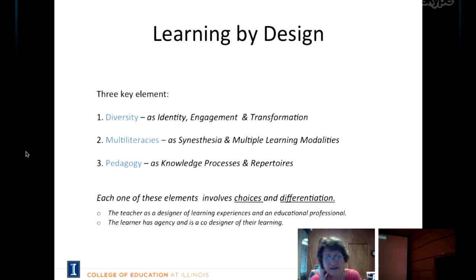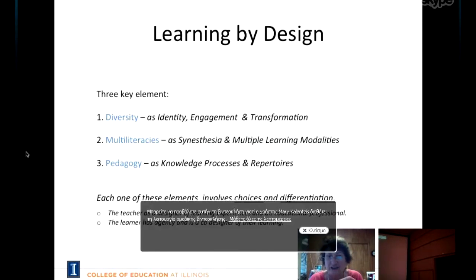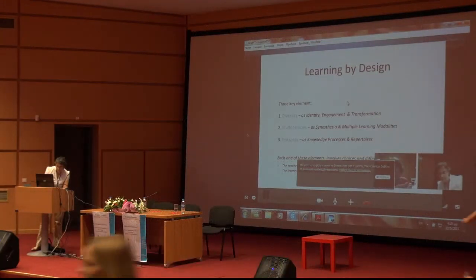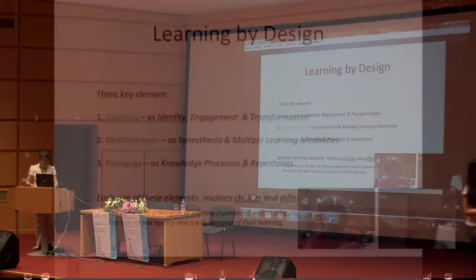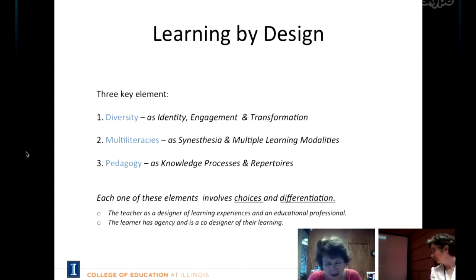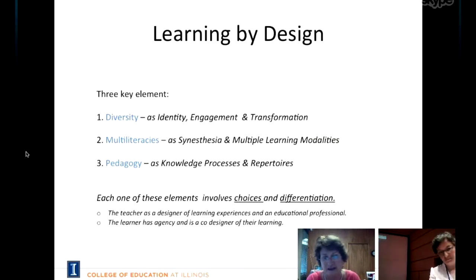In learning by design, there are three key elements that define the tools we use in the preparation of teachers. The first is an orientation — a set of tools for thinking about the diversity of your learners and how you harness their identity so they're engaged for the purpose of transformation. When you choose to be a teacher, the job is not to get through the curriculum or understand only content area. What you're doing all the time is tracking the transformation of your learners — how are they changing as a consequence of their engagement with the learning experiences you have designed?